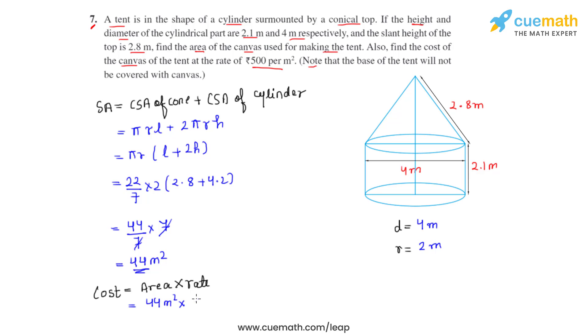The area that we used of the canvas is 44 meters squared, as we have just calculated, and the rate is 500 per meter square. So on calculation, we will get the answer as rupees 22,000, which is the cost of the canvas that was used to make the tent.